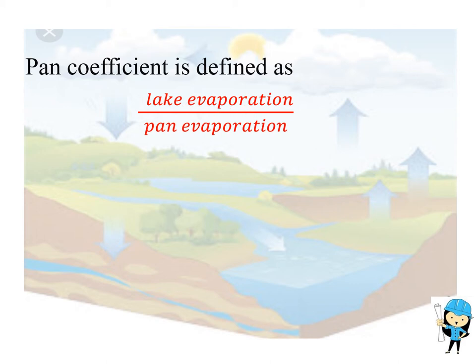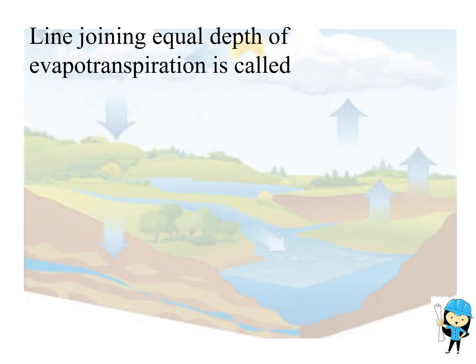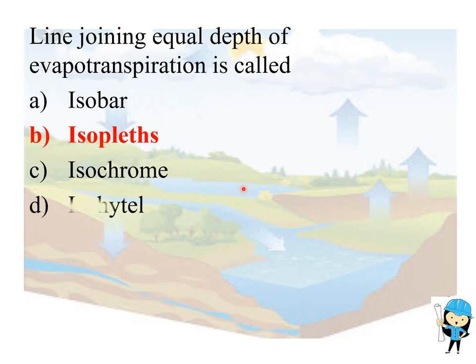The line joining the equal depth of evaporation is called isopleth, and isochrone is defined as a line joining the points of equal time interval of travel of surface runoff. Isohyet is defined as a line joining the points of equal rainfall depth.